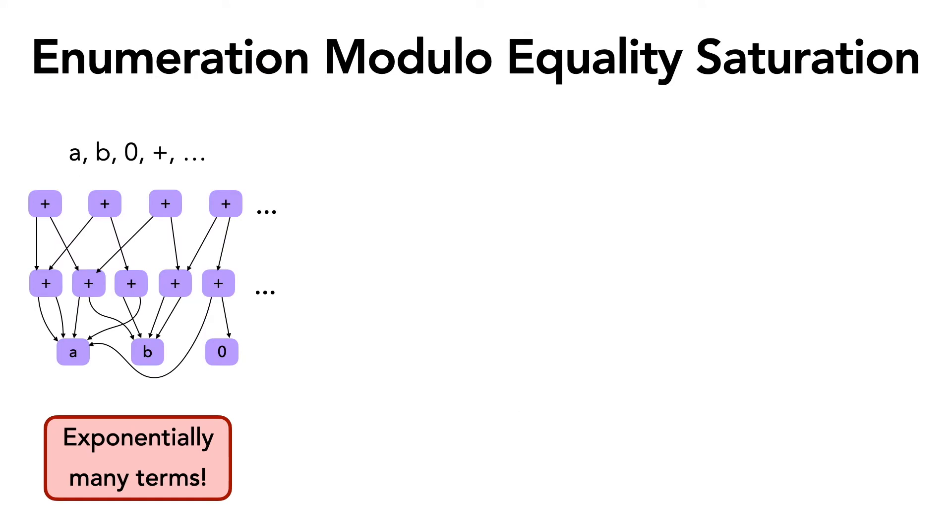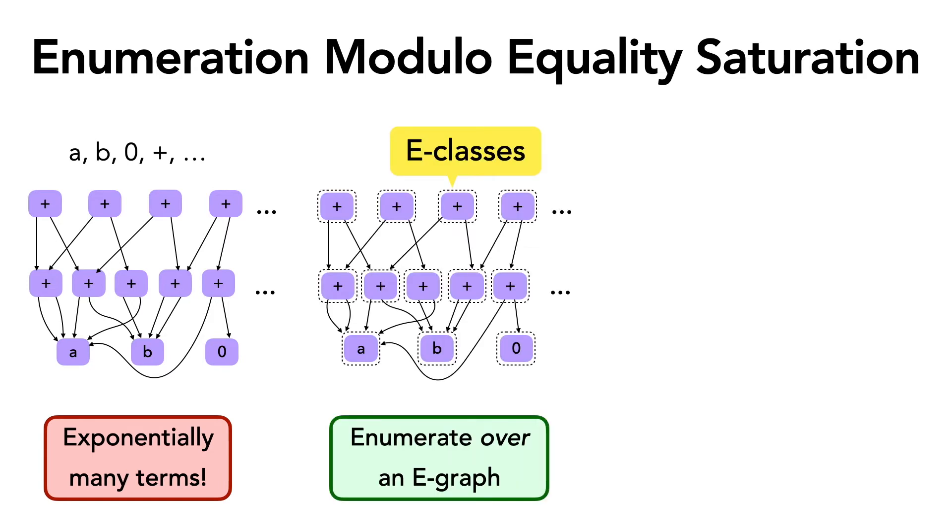Recall that naively enumerating terms from the grammar can lead to exponentially many terms, which makes it hard to navigate the term space.